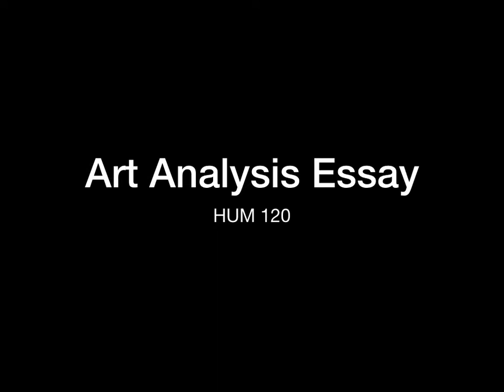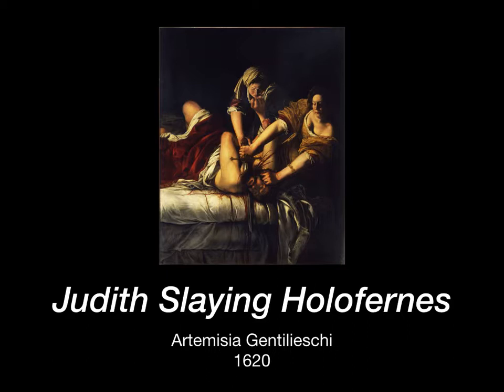Line, color, texture, chiaroscuro, harmony — I don't want you to try to talk about 10 different elements and principles, because if you do that, you're probably not going to do any of it well. For this, I would pick 2 and focus on those. And remember, it's not just saying where they are in the work — it's answering the so-what question. If you're looking at Judith Slaying Holofernes and you decide to talk about color, it's not enough to say there's color in the work. You need to answer how and why the color is important to the work — what does it do. Focus on one paragraph for each of the elements and then move on.